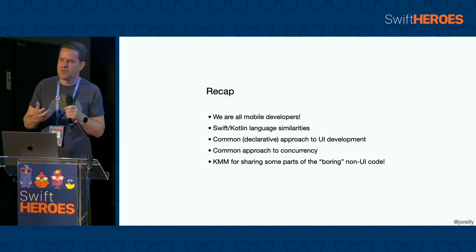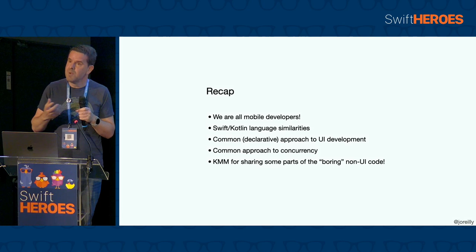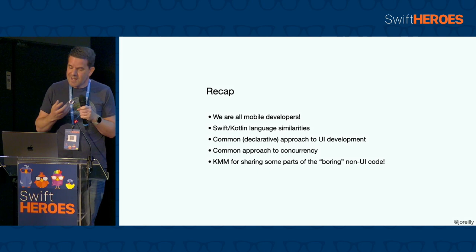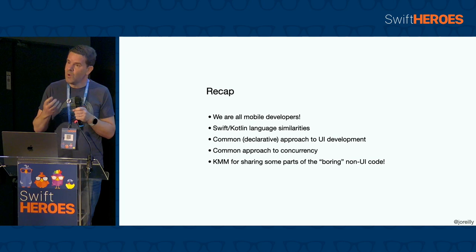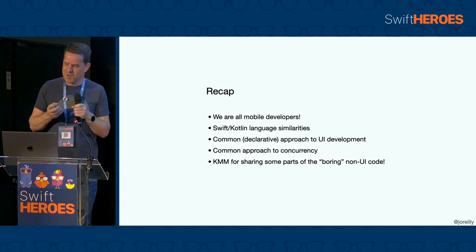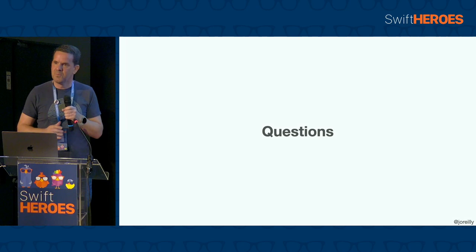That was a whirlwind tour of some of the areas that have contributed to the convergence of native iOS and Android development. There are of course many different permutations in how mobile development teams are organized, but we at least have more possibilities now for people working on both platforms and becoming more general mobile developers. We've seen similarities in the languages, but even more important is the common approach we now have to both UI development and structural concurrency. And complementing that is the possibility of using Kotlin Multiplatform for sharing some of the boring non-UI code on both platforms. Thank you.